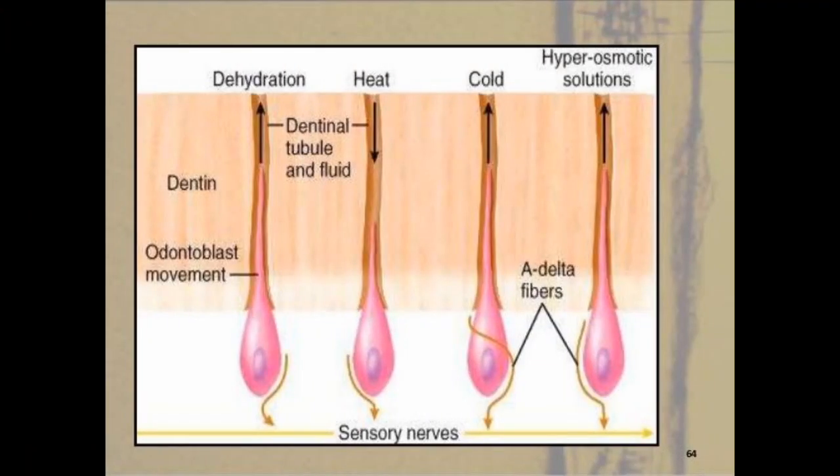The first theory that was presented to explain this phenomenon is known as the direct innervation theory. This theory argued that the nerves entering from the apical foramen towards the pulp traverse across the odontoblasts and enter into the dentinal tubules, and the pain that is felt is because of these free nerve endings.